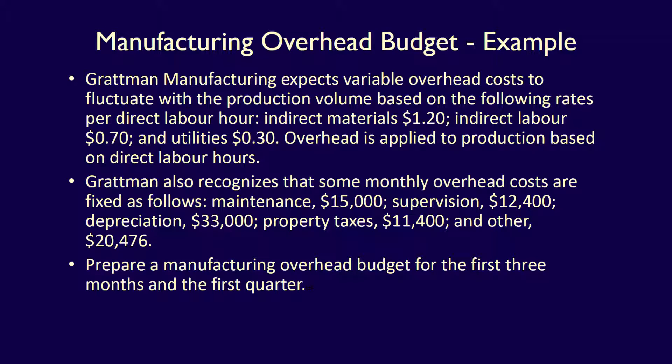We're continuing with our example of Gratman Manufacturing to demonstrate the preparation of a manufacturing overhead budget. Gratman Manufacturing expects variable overhead costs to fluctuate with the production volume. Variable overhead costs are based on the following rates per direct labour hour: indirect materials $1.25, indirect labour $0.70, utilities $0.30. Overhead is applied to production based on direct labour hours. Gratman also recognises that some monthly overhead costs are fixed: maintenance $15,000, supervision $12,400, depreciation $33,000, property taxes $11,400, and other $20,476. Prepare a manufacturing overhead budget for the first three months and the quarter.